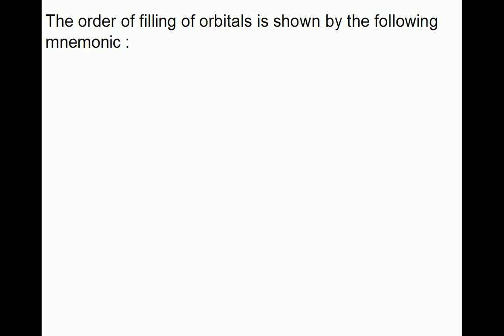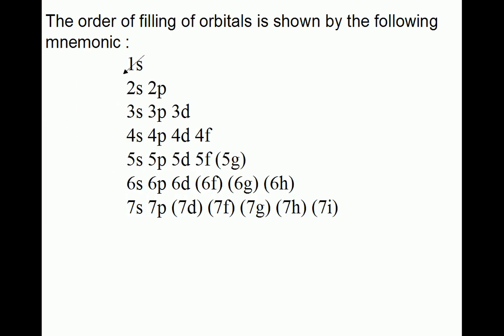The order of filling of orbitals is shown by the following mnemonic. The 1s orbital is filled first, followed by 2s, 2p, 3s, 3p, 4s, 3d, 4p, 5s, 4d.